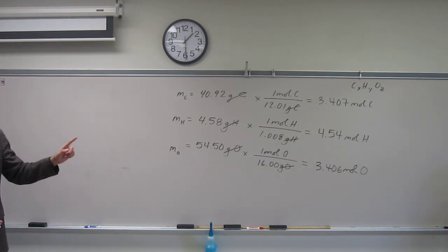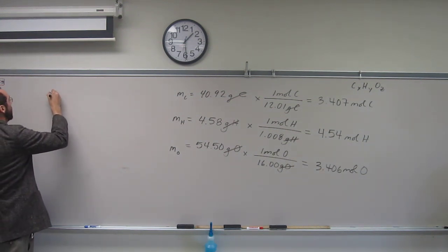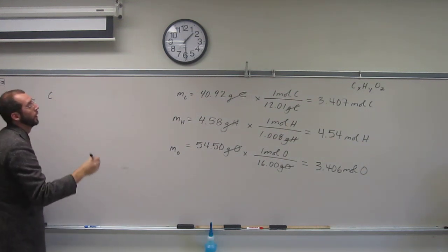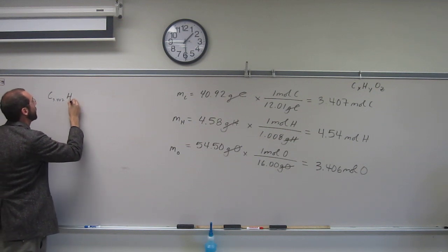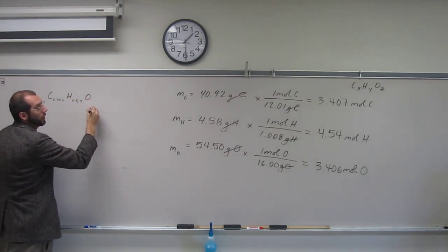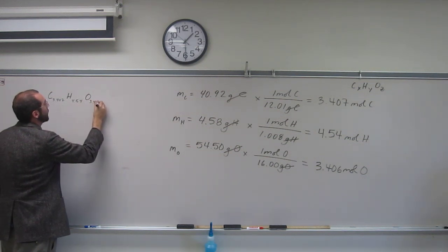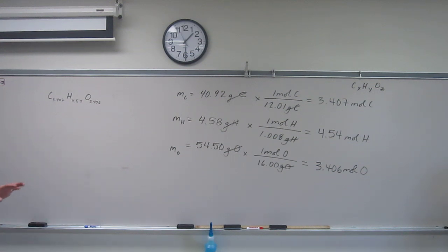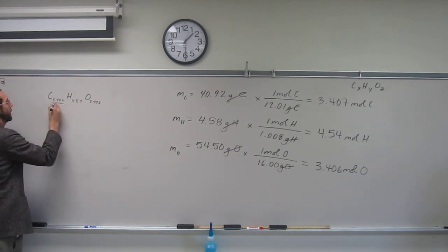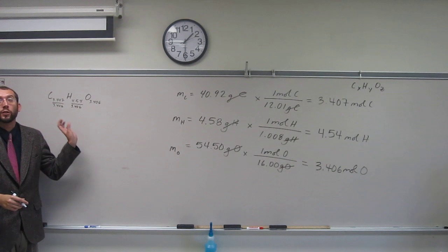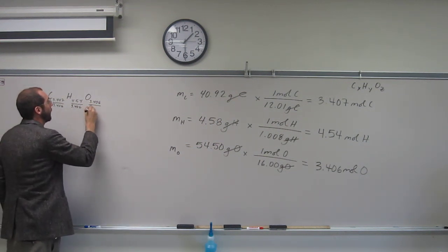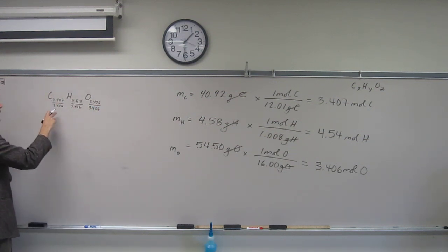Now what I want to do is figure out what X, Y, and Z are. In order to do that, I have to put those mole ratios in there. C is 3.407, H is 4.54, and O is 3.406. Then I divide by the smallest of those numbers. In this case, 3.406 is going to be the smallest. We're getting really close to these whole number ratios. If I divide this, that's going to be close to the ratio of 1 to 1.